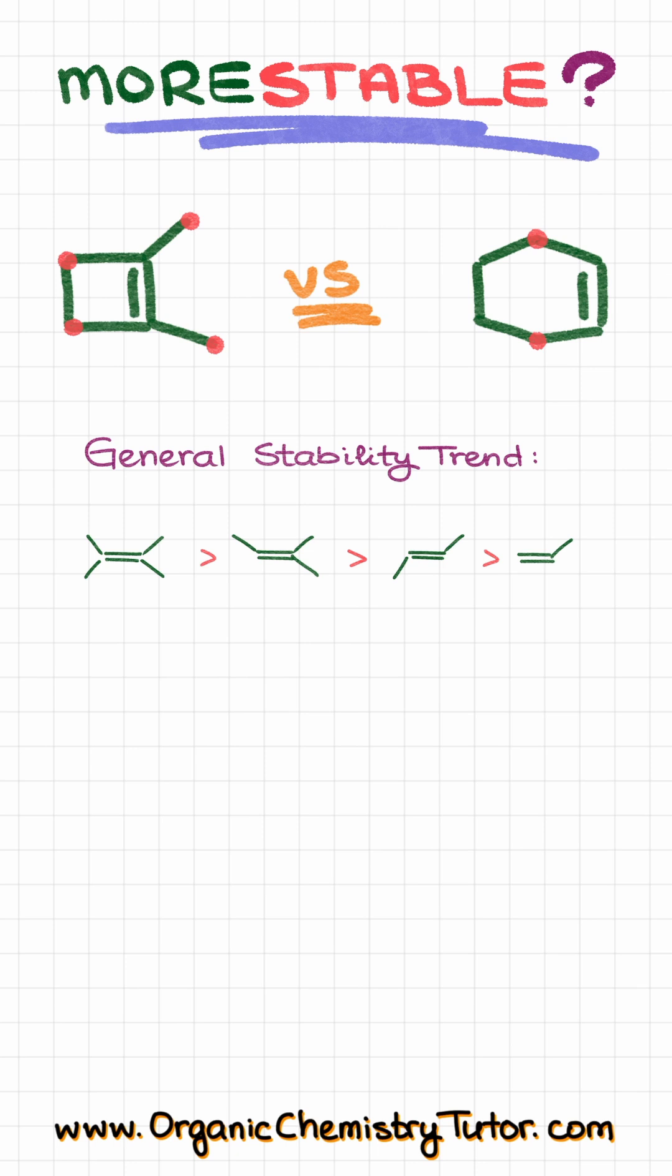But remember, alkenes have sp2-hybridized atoms, which means that they should have 120-degree bond angles. But if we look at the four-membered ring that we have over here, the bond angle that we are going to be seeing there is somewhere around 90 degrees, which means that the molecule is going to be experiencing a huge angular strain, significantly decreasing the stability of this molecule.